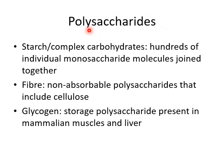And then our last group is the polysaccharides, which consist of three or more carbohydrates joined together — basically hundreds of individual monosaccharide molecules drawn together. This comes in various forms: starch or complex carbohydrate, which we can absorb and digest; fiber, which is non-absorbable; and the most common form of non-absorbable complex carbohydrate is cellulose. Furthermore, we also have glycogen, which is also a polysaccharide. We can consume it from mammalian tissue and mammalian livers, but we also synthesize glycogen in our own muscles and liver.